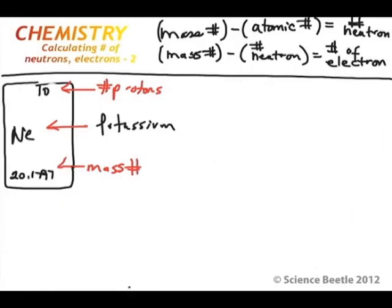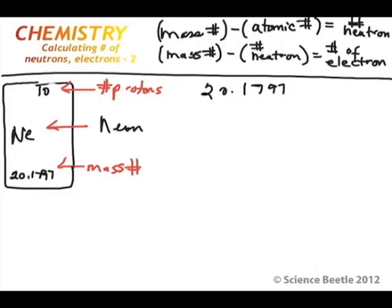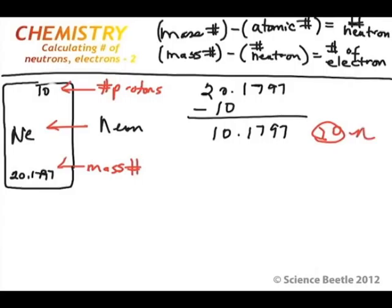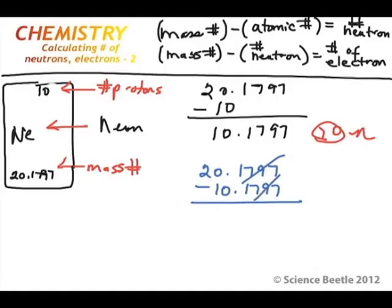We've got Ne — not potassium, but Ne is the symbol for neon. Go ahead and pause to see if you can come up with the right answer. We take the mass number 20.1797 and subtract the atomic number 10. We get 10.1797, which we round up to 10 — that's our number of neutrons. Then 20.1797 minus 10.1797: these cancel out and we're left with 10 electrons.